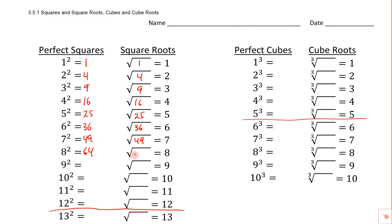8 squared is 64, so the square root of 64 is 8. 9 squared is 81, so the square root of 81 is 9. 10 squared is 100, so that means the square root of 100 would be 10.